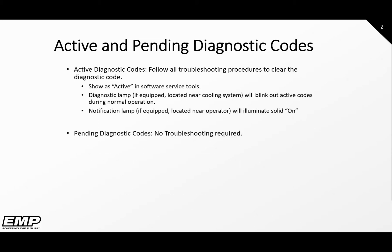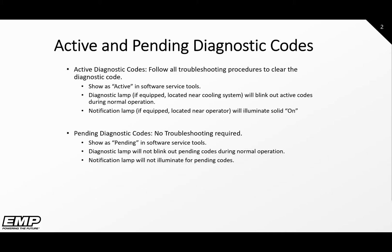Pending codes do not require troubleshooting. These codes are usually informational and are reacting to an event outside the cooling system. For example, if the battery voltage is low, the system will throw a pending 02 code to inform the technician that the system voltage is low. This will let the technician know that they should check the batteries or the circuit providing power to the cooling system. These codes will show as pending when viewed in the service tool, and the diagnostic and notification lamps will not blink pending codes during normal operation.